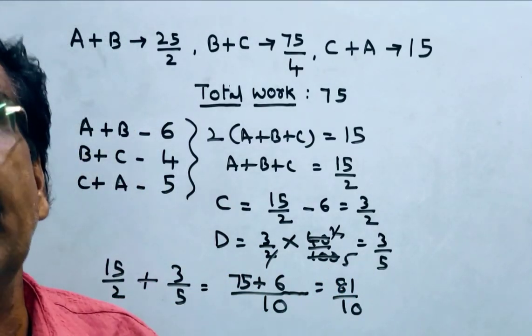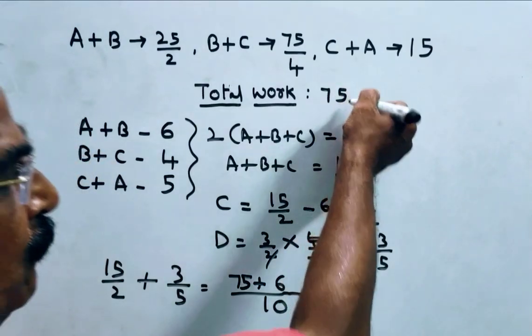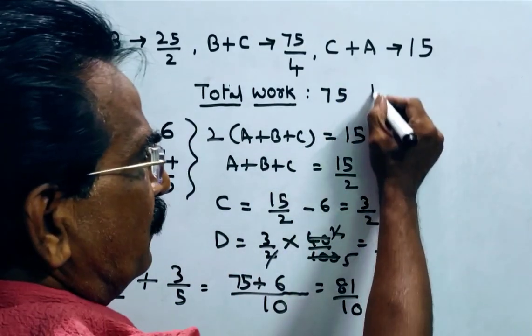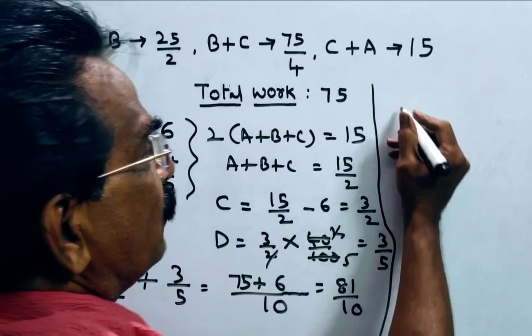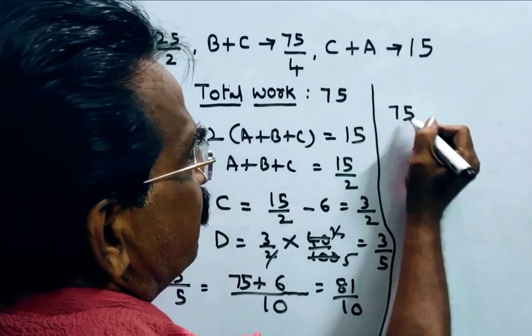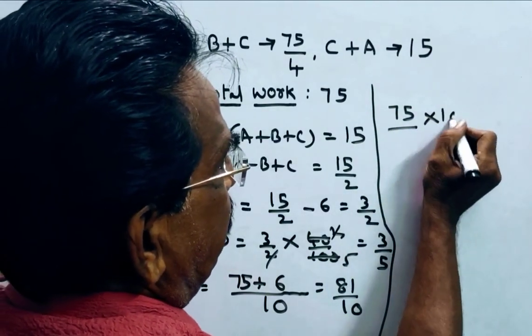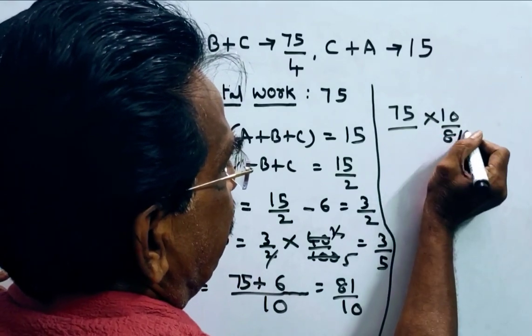So in how many days, in how many days, in how many days means total work by this, total work by this, total work 75 units by 81 by 10 that is into 10 by 81, 10 by 81.